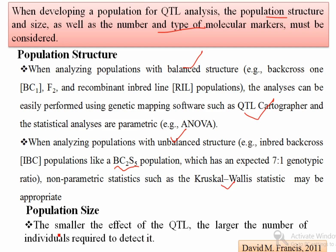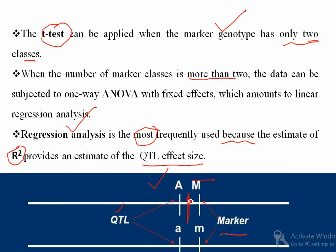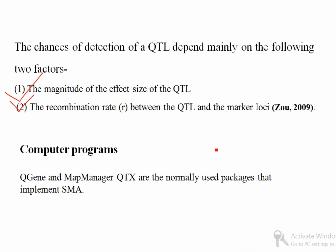Regarding population size: if a QTL has a very small effect, you need a large number of individuals to detect it. The smaller the effect of the QTL, the larger the number of individuals required — this is a universal point for all QTL detection methods. The chance of QTL detection also depends on the recombination rate between the QTL and the marker. If recombination occurs between the marker and QTL, they will separate, giving spurious results.